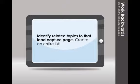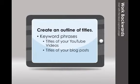The next thing you want to do is create an outline of titles — and this is your SEO. You've got your lead capture page at the center, a bunch of related topics around it, and what you want to do is create an outline of 20, 30, 40, or 50 titles. These SEO titles — search engine optimization — are essentially like keyword phrases.